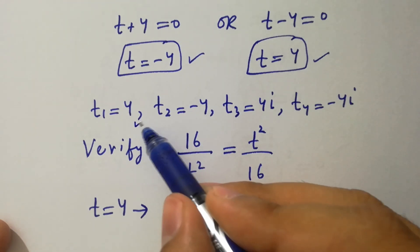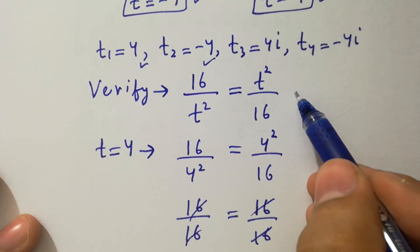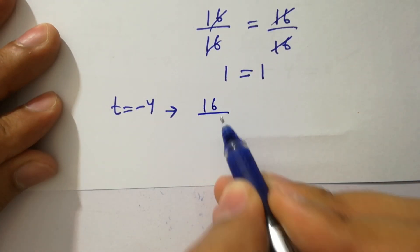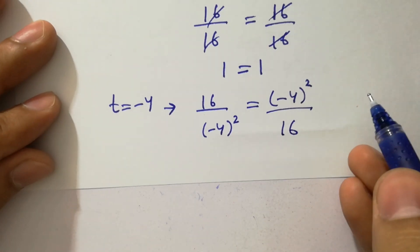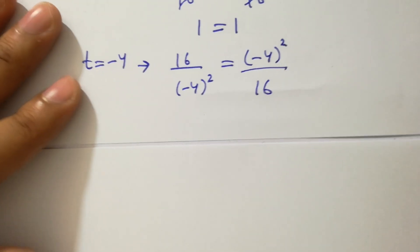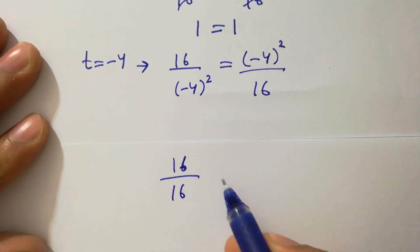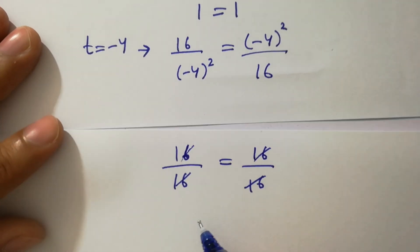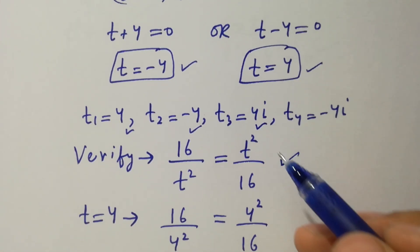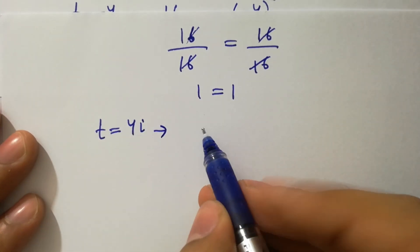Now take t equals minus 4 and put it into the equation: 16 over (minus 4) squared equals (minus 4) squared over 16. Since (minus 4) squared equals 16, we get 16 over 16 equals 16 over 16, so 1 equals 1. Left hand side equals right hand side.